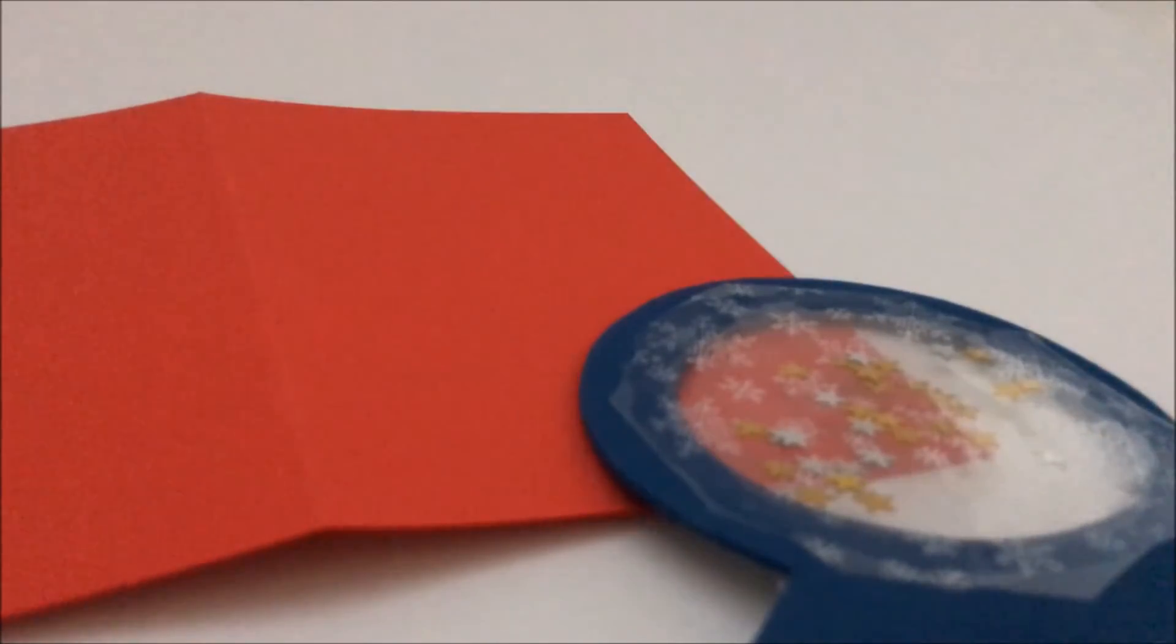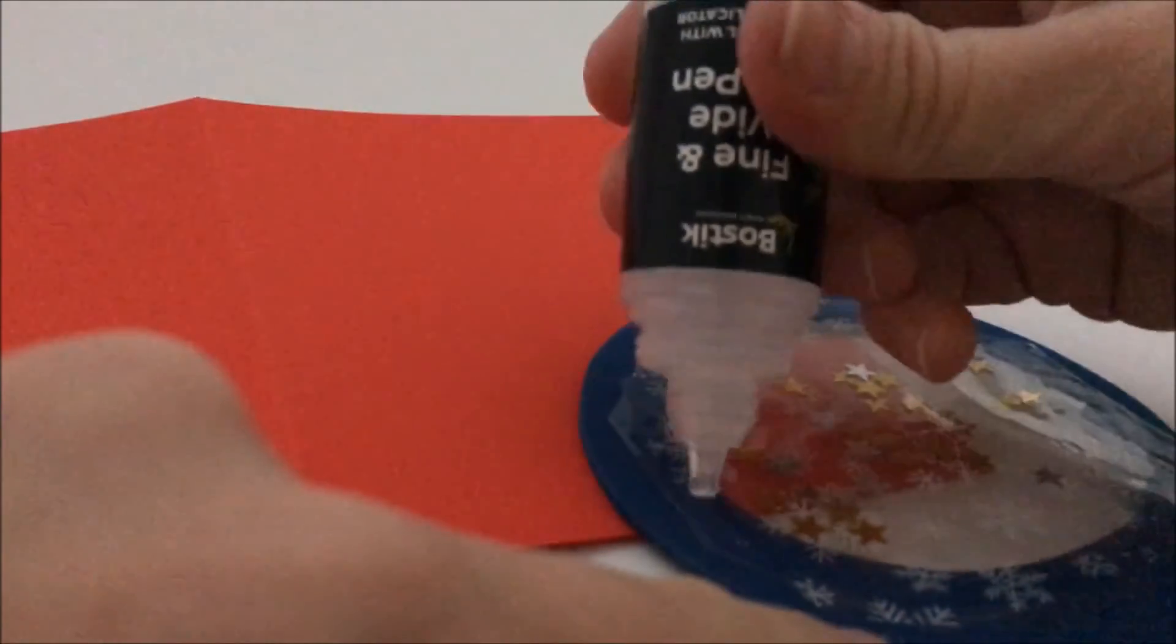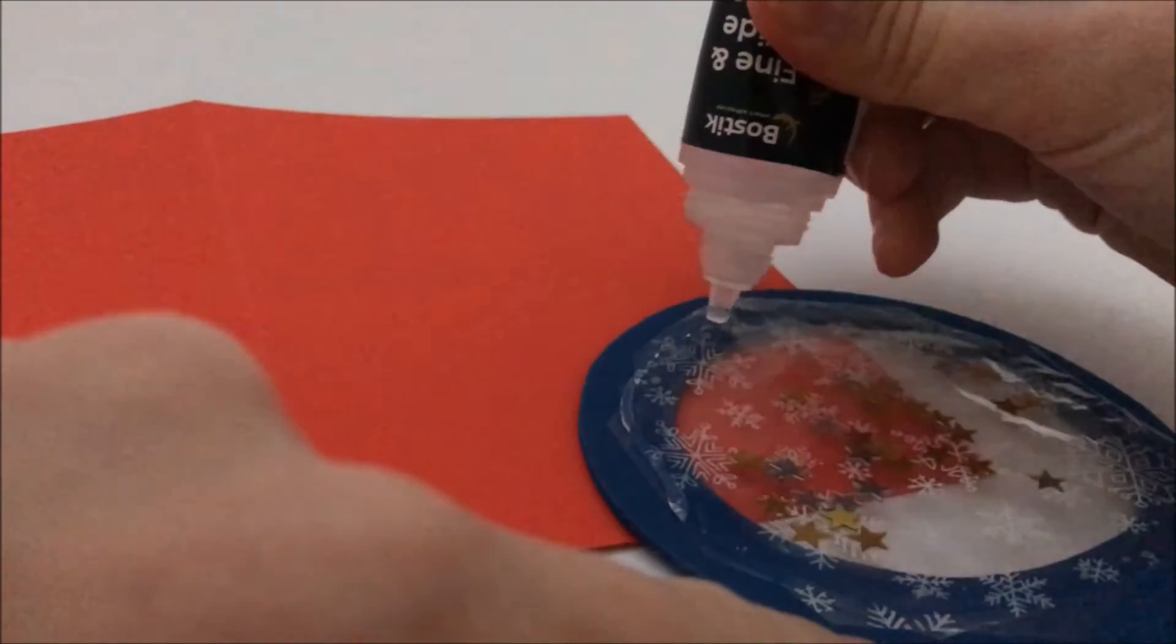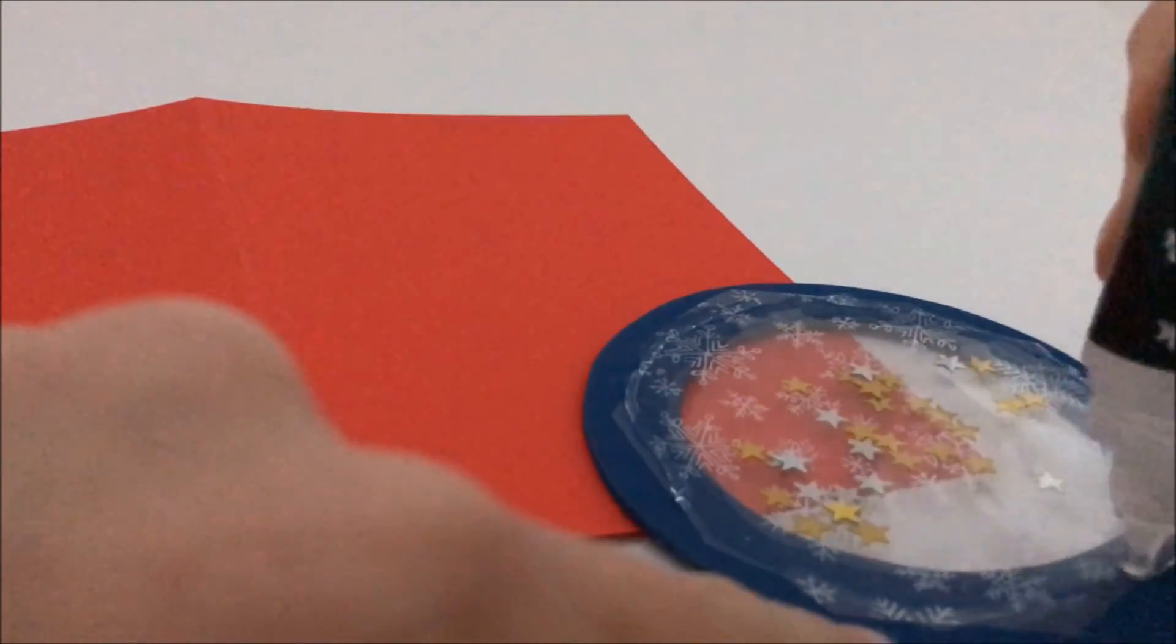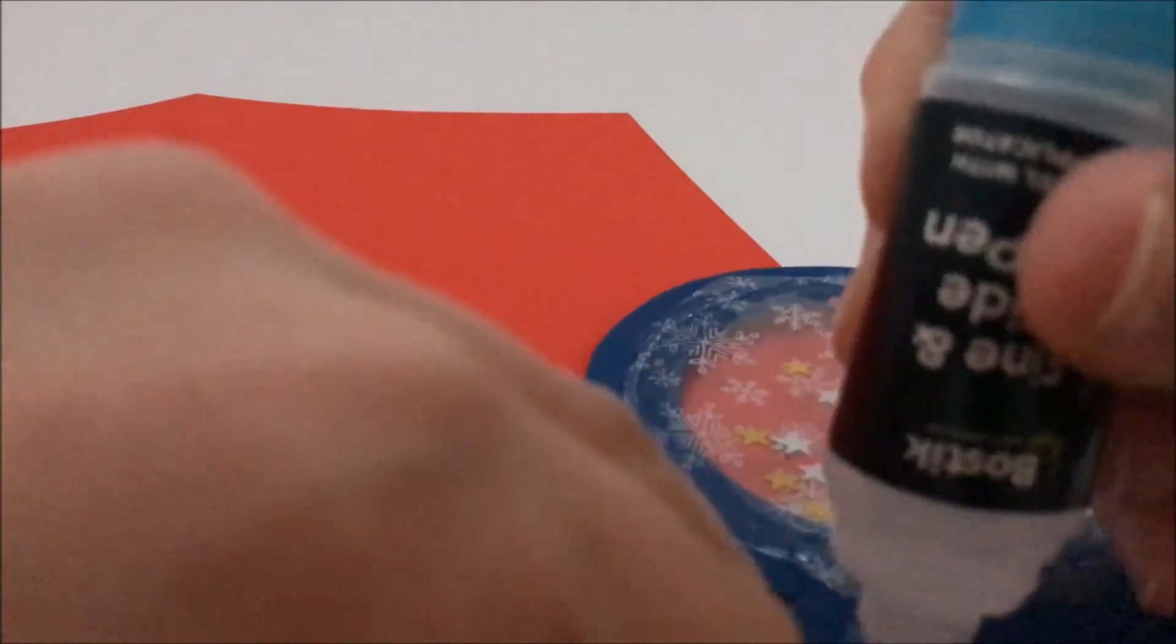And so then we just need to stick the snow globe to the front of the card. We're going to put another ring of glue around the outside and some on the bottom.